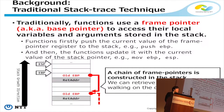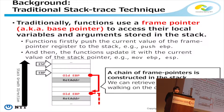I'll start talking from background. Traditionally, functions use a frame pointer to access their local variables and arguments stored in the stack. Functions firstly push the current value of the frame pointer onto the stack, just like a push EBP instruction. And then the functions update it with the current value of the stack pointer, just like move EBP to ESP. As a result, a chain of frame pointers is constructed in the stack, so we can retrieve return addresses by walking the chains.